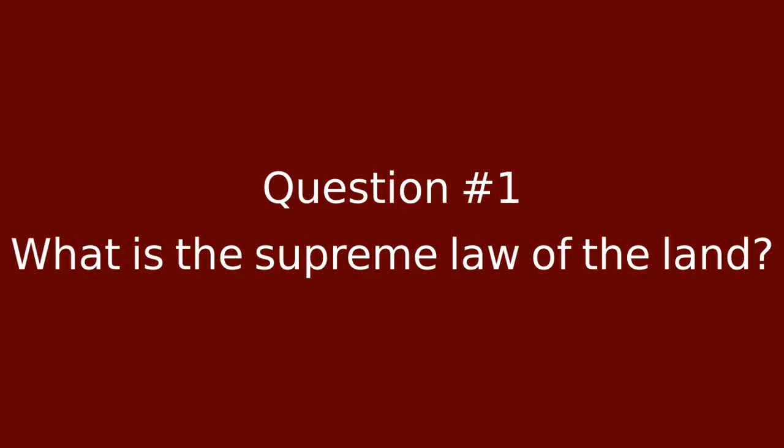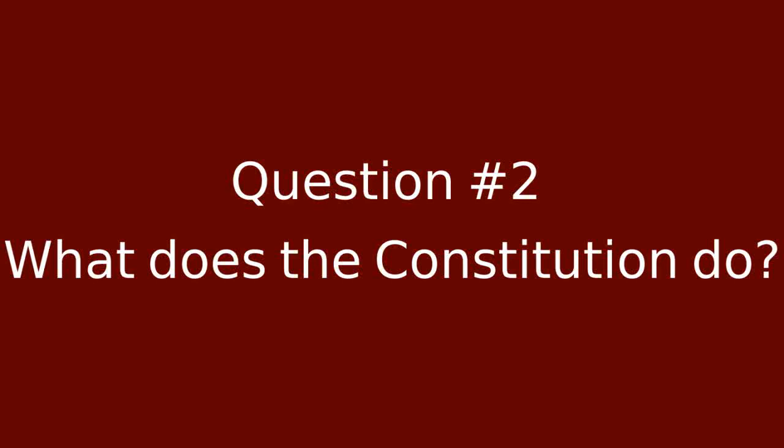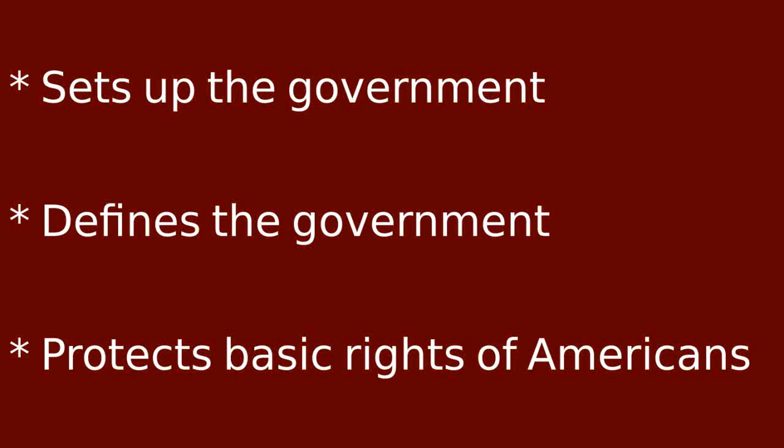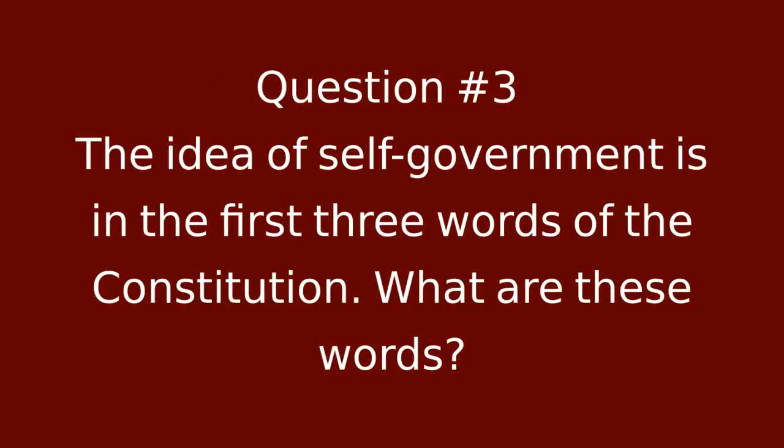What is the supreme law of the land? The Constitution. What does the Constitution do? It sets up the government, defines the government, and protects basic rights of Americans. The idea of self-government is in the first three words of the Constitution. What are these words? We the people.